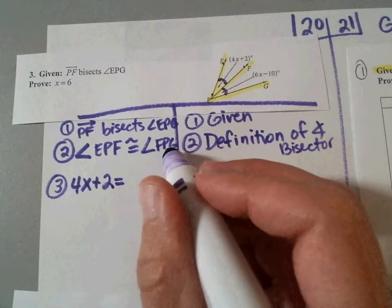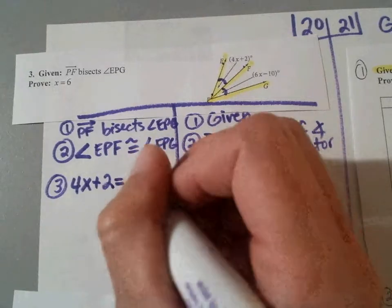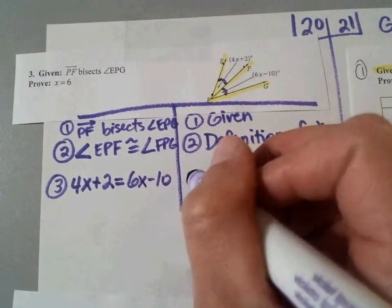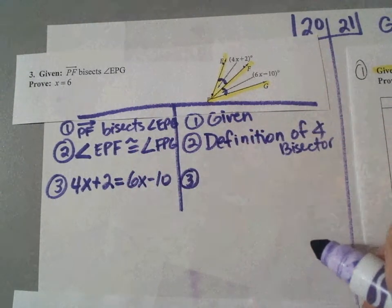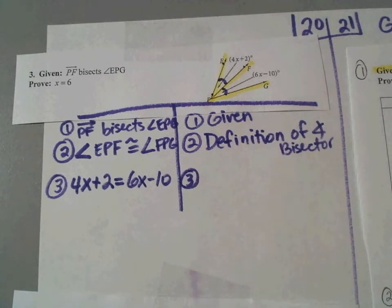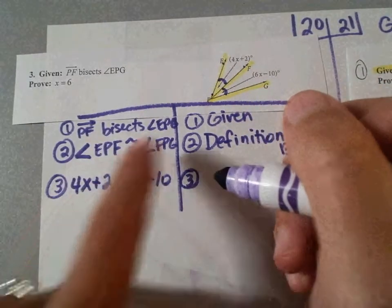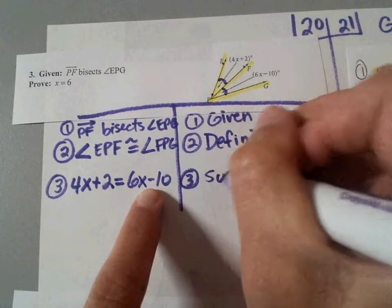So we're going to say 4X plus 2 is equal to FPG. How big is FPG? Good. 6X minus 10. And how did I know they were equal? Or what did I do there? Substituted. I substituted this in for that and that in for that. So this is called substitution.